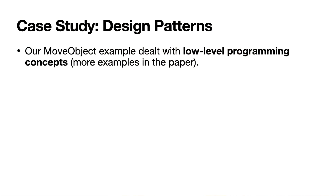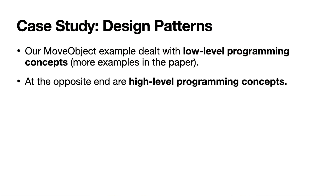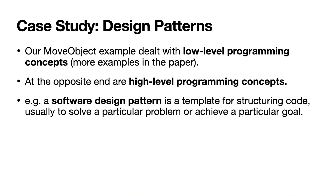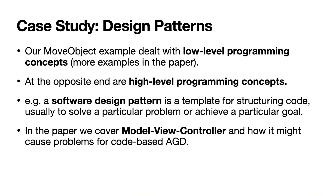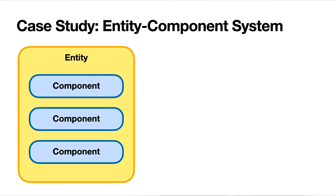There are a lot more examples in the paper of low-level design stuff like writing a single function and changing a single line of code. But before I close out the talk, I wanted to sneak in a bit of conversation about high-level programming concepts — primarily software design patterns. In the paper we talk about model-view-controller, which is a software design pattern that has certain qualities that might be considered negative for an AGD system. But today I just want to talk about one example: the entity component system.